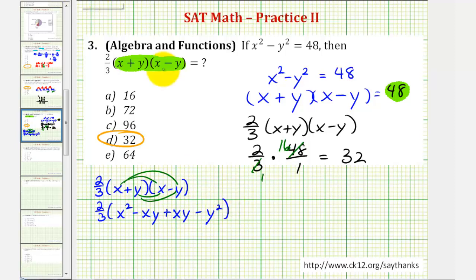So notice how the two middle terms are opposites, so this sums to zero. So now we have 2/3 times the quantity x squared minus y squared. In this form we should recognize, looking at the given equation, since x squared minus y squared equals 48, we can replace this difference here with 48 to get the same result.